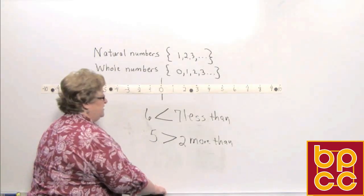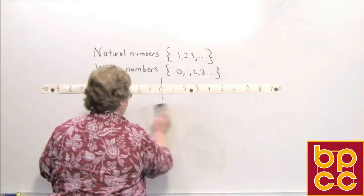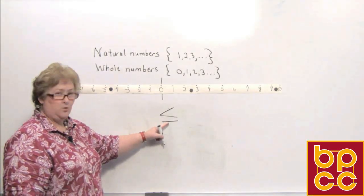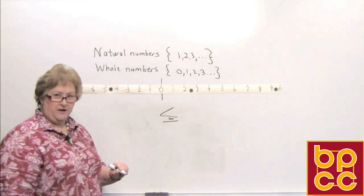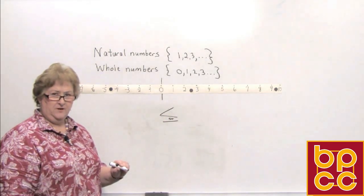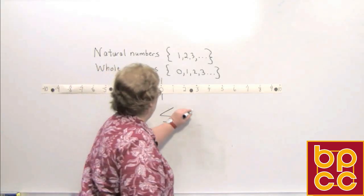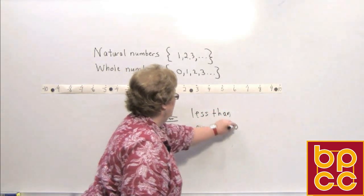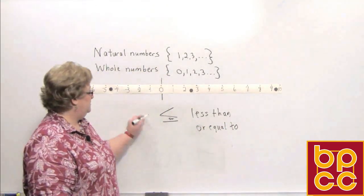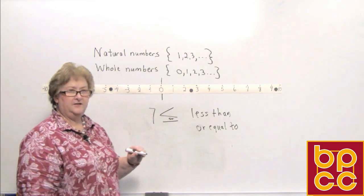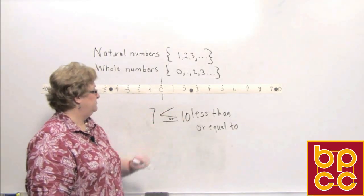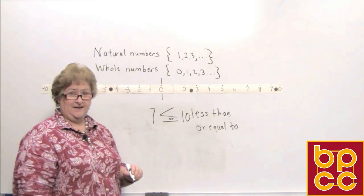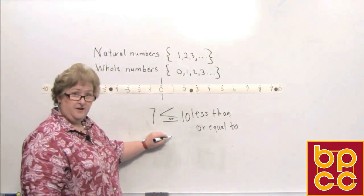Now let's look at our next set of inequalities. This symbol says 'less than or equal to.' If either part is a true statement, then the whole statement is true. For example: seven is less than or equal to ten. On the number line, seven is less than ten, so that statement is true because it fits the less than part.